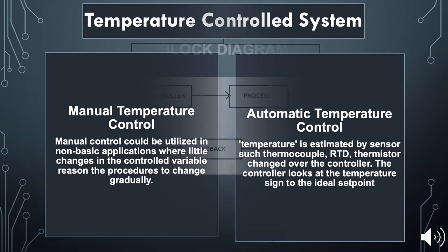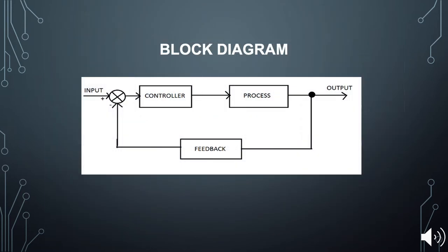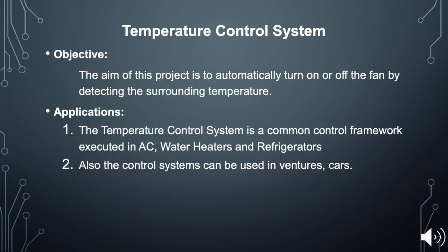Now I'm going to talk about the block diagram. As you can see, we have a closed-loop control system. The input signal goes through the controller, which controls the input signal, then goes through the process to the output. Otherwise, a feedback signal comes back — if the process is complete it goes to output, otherwise feedback is returned.